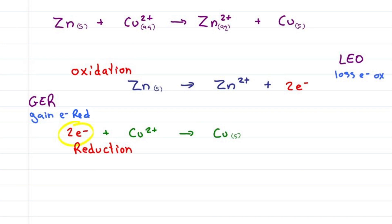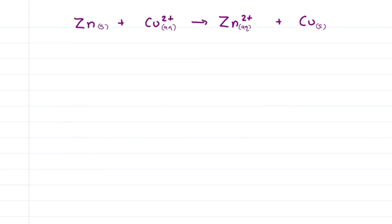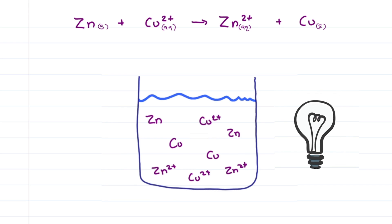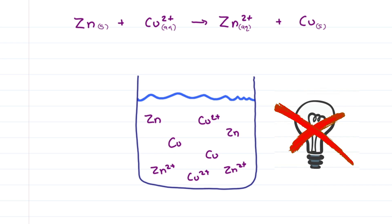This balanced reaction can only happen because zinc gives up two electrons to copper, meaning these are the same two electrons given up by zinc and taken up by copper. However, since this is a spontaneous reaction, if we dump it all into a container of water, we will get redox but no electricity. We have no way to capture the electrical energy.